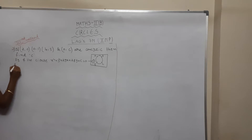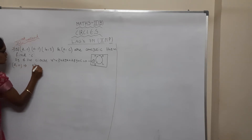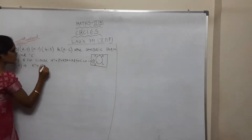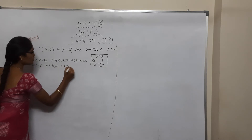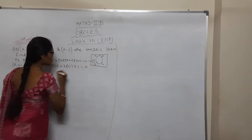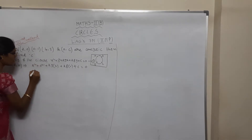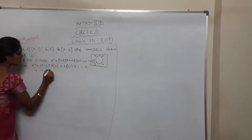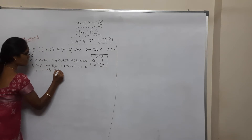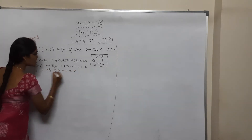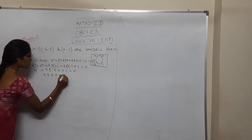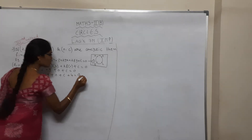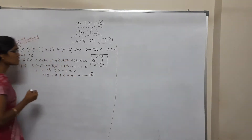It passes through (2,0). So 2² + 0² + 2G(2) + 2F(0) + C = 0, giving 4 + 4G + C = 0. Written in order: 4G + C + 4 = 0. Consider this as Equation 2.